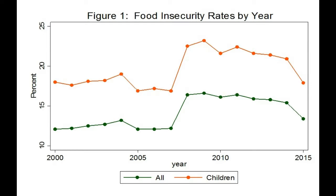My second slide on food insecurity is going to show what has happened in the United States since 2000, looking from the year 2000 all the way through 2015. The first thing to note is that even in 2000 and 2007, which were really good economic times, approximately 30 million Americans were food insecure. So even if the economy improves, we still have to be worried about this in a profound way. The second thing is that from 2007 to 2008, there was a huge increase in food insecurity — rates increased by 30%.